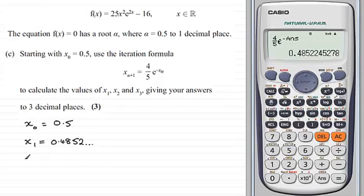Now, to get the next approximation, x₂, all I need to do is just press equals again. And you can see what we've got here is 0.4924, and so on.